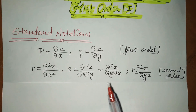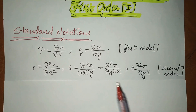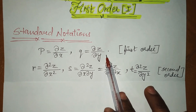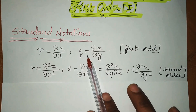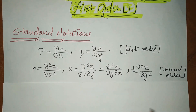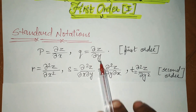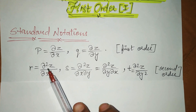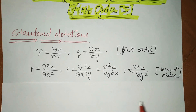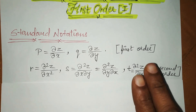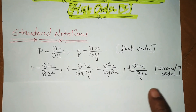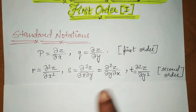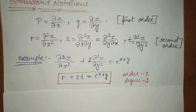Similarly, the remaining notations given are the same. We call it first order because differentiation has happened only once — it's differentiated only once, that's why it's first order. Here you can see the power is 2, meaning it has been differentiated 2 times — that's why this is second order. Both notations: 2nd order, 1st order.